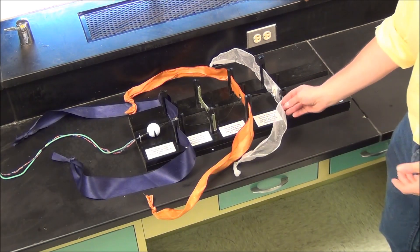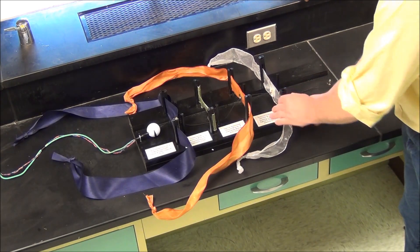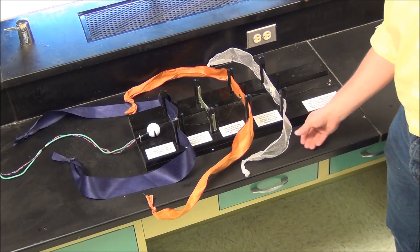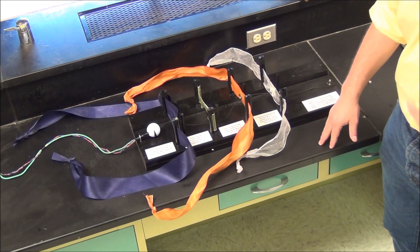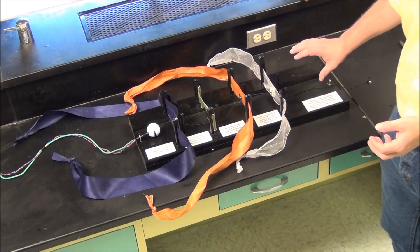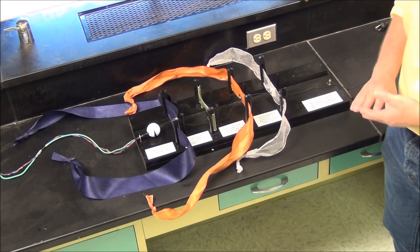The last layer the testes descends through on its way to the scrotum is the external abdominal oblique muscle, shown here in white. And that is going to give rise to the superficial inguinal ring. And as it wraps around the spermatic cord, it becomes the external spermatic fascia.